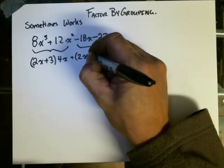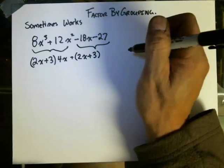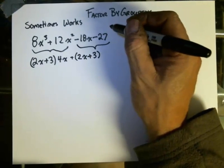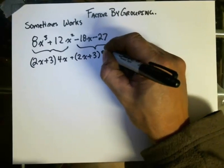There is a 2x plus 3 factor in the second two terms, and that is being multiplied by a negative 9.